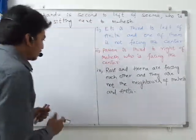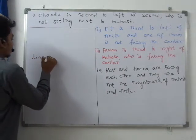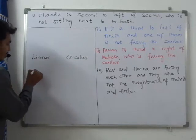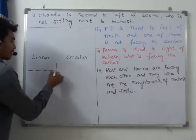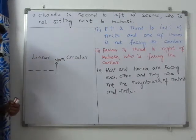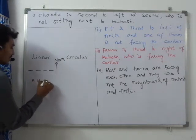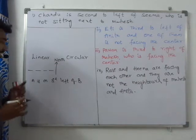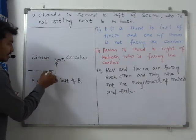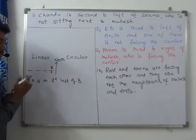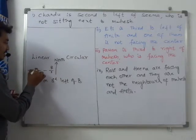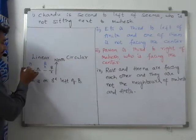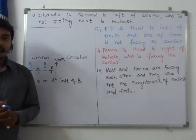Let us see the basic difference between linear and circular seating arrangement. In linear seating arrangement, let us say there are four persons facing towards the north. If A is on the second left of B, and if B is at a certain position, A will sit at the second left of B — first left, second left. If the position of B changes, the position of A changes accordingly. So you have clear references to fix the positions of the variables.